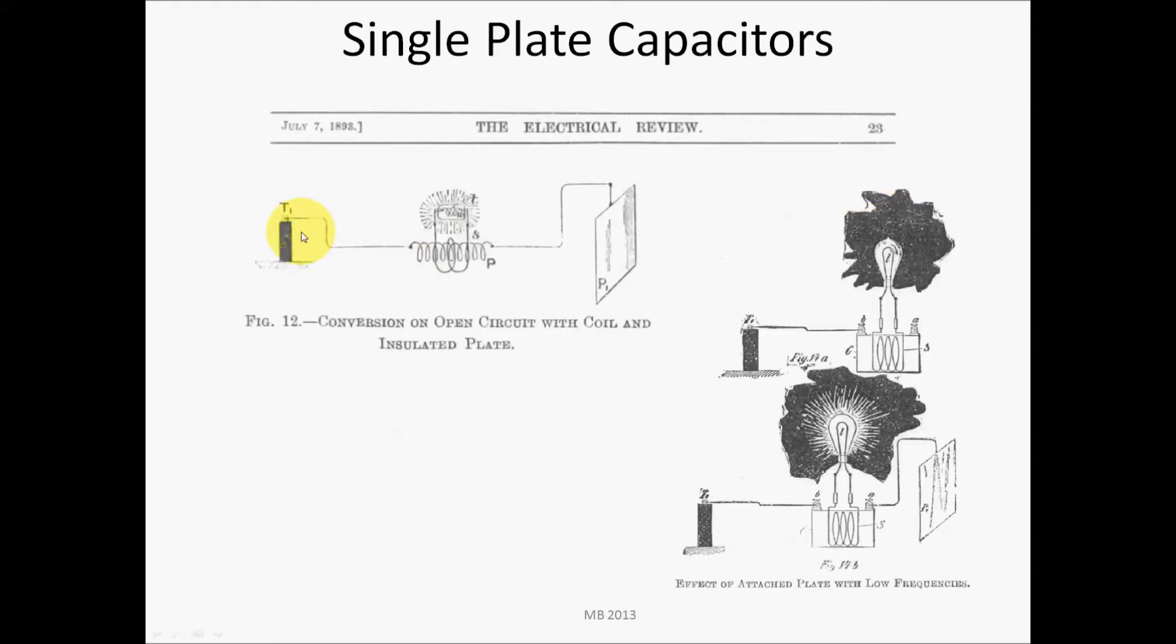So what we have here is a couple illustrations of a single plate capacitor used in a circuit. You have this T1, which is a terminal for some high-frequency power source. You have the high-frequency currents going through a coil, then a light is coupled into the magnetic field of the coil through a secondary coil.